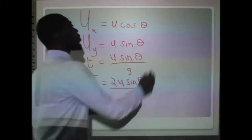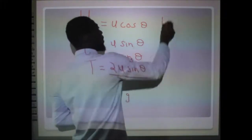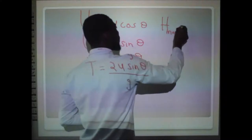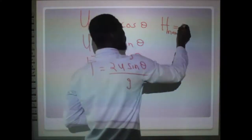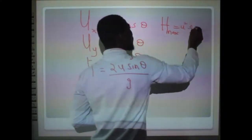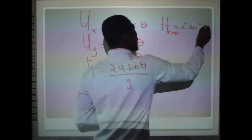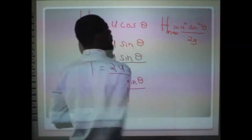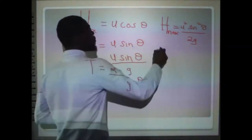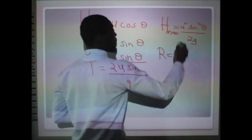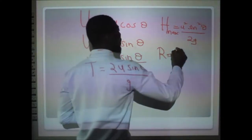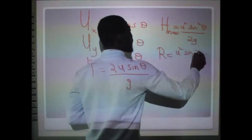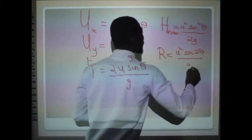The maximum height attained is expressed as u²·sin²(θ) / 2g. The range R is expressed as u²·sin(2θ) / g.